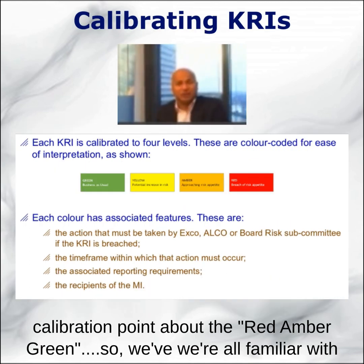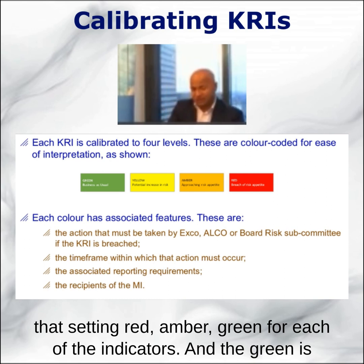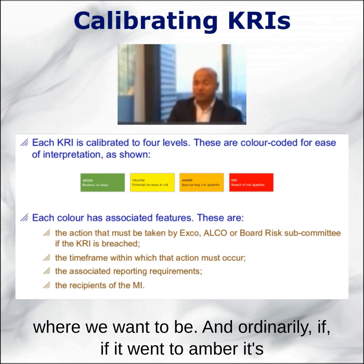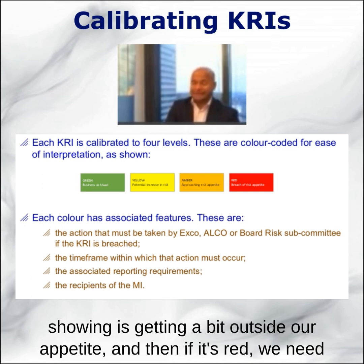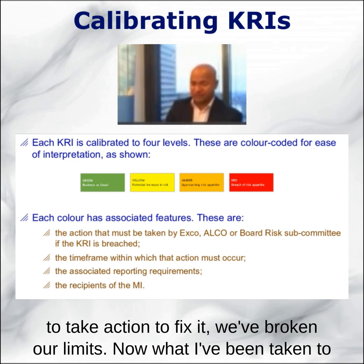We're all familiar with setting red, amber, green for each of the indicators. Green is where we want to be. Ordinarily, if it went to amber, it's showing it's getting a bit outside our appetite. And then if it's red, we need to take action to fix it — we've broken our limits.